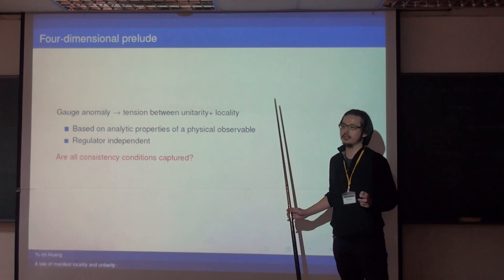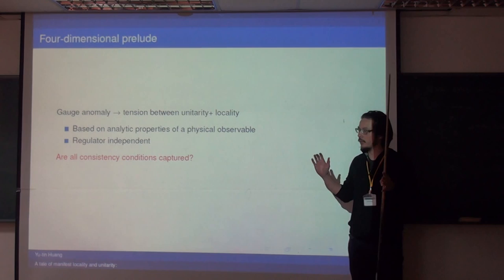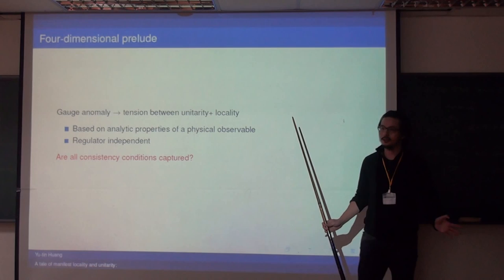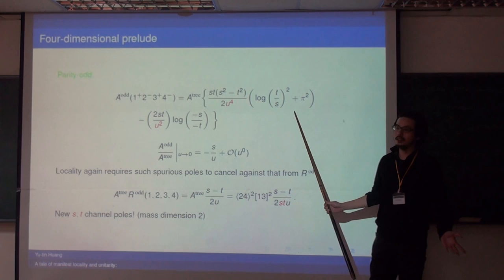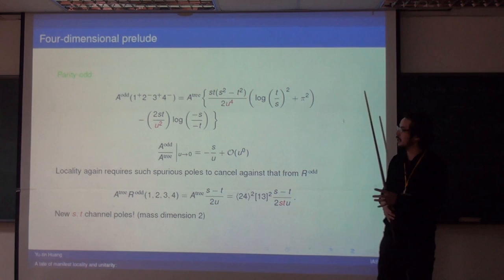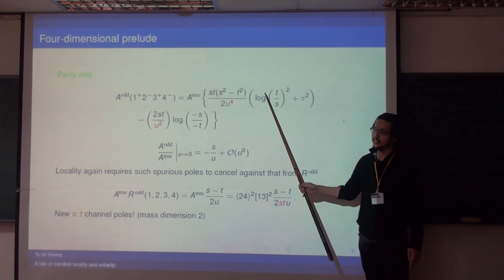The upshot of this analysis: it is based purely on analytic properties of physical observables and does not depend on how you obtained your amplitude in the first place. We just do it in two steps — unitarity and locality. Moreover, going back to the original parity-odd computation, there is no divergence at all. There is no need for a regulator. The final answer is regulator-independent, so no matter which regulator you use, you will encounter the same problem. This statement is completely regulator-independent.